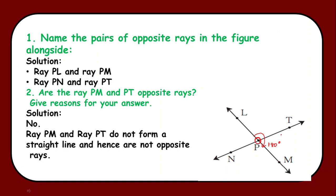For this ray PM and PT they don't move in opposite direction. Either they are forming an acute angle in between them. That is your third condition is also not satisfied. So what we can say that ray PM and PT do not form a straight line. And hence they are not a pair of opposite rays. I hope children everyone is clear with today's concept.